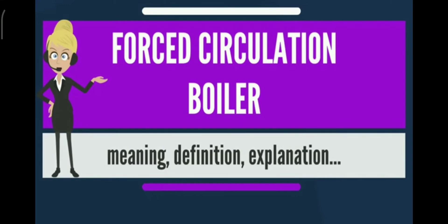Because of this, the generation tubes of the forced circulation boiler are able to be oriented in whatever way is required by space constraints. Water is taken from the drum and forced through the steel tubes. In this way, it is able to produce steam much faster than a natural circulation boiler.